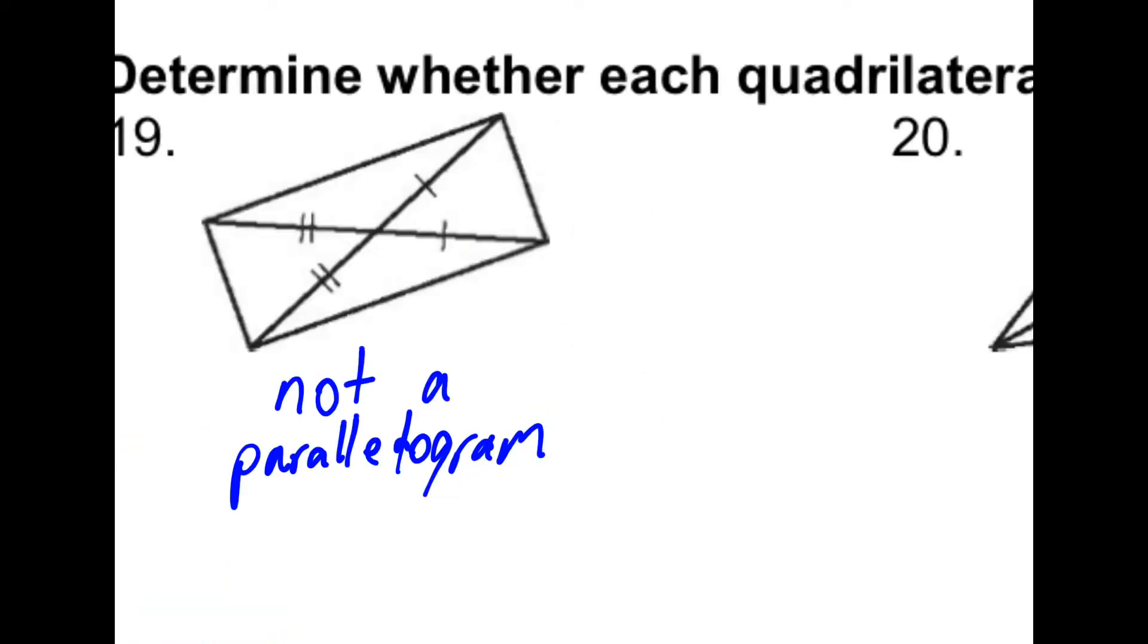19, not a parallelogram. These would have to match up to use the rule that diagonals must bisect each other, or if they do, the whole thing is a parallelogram.